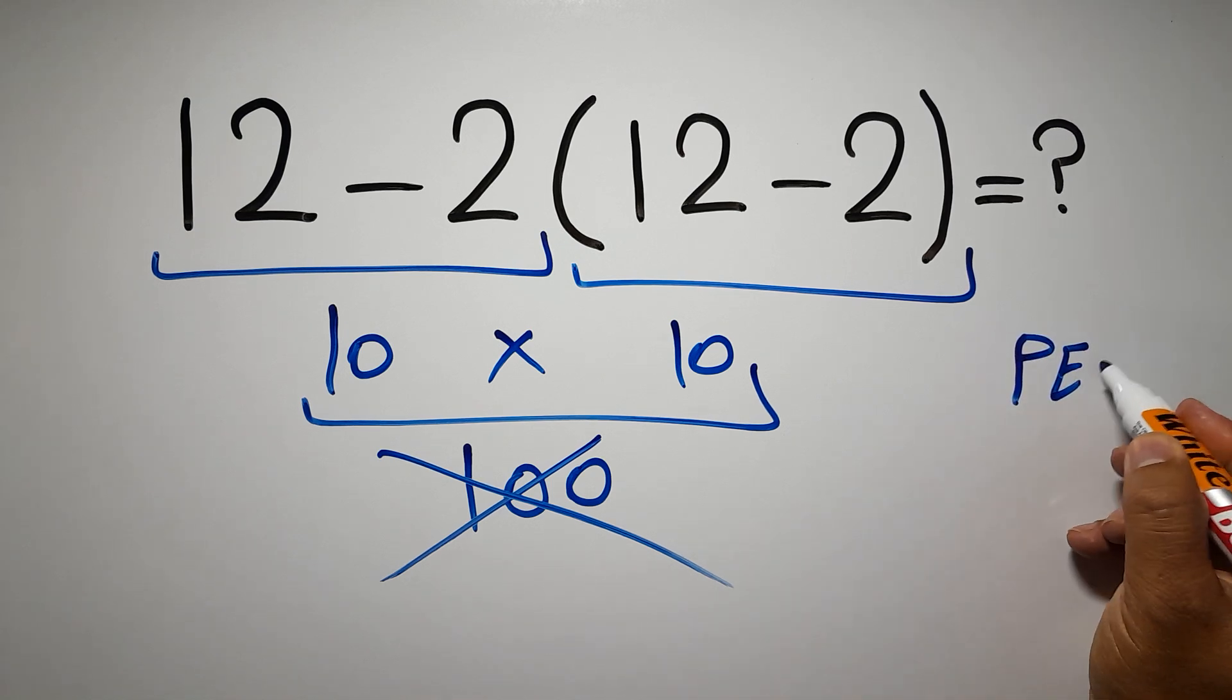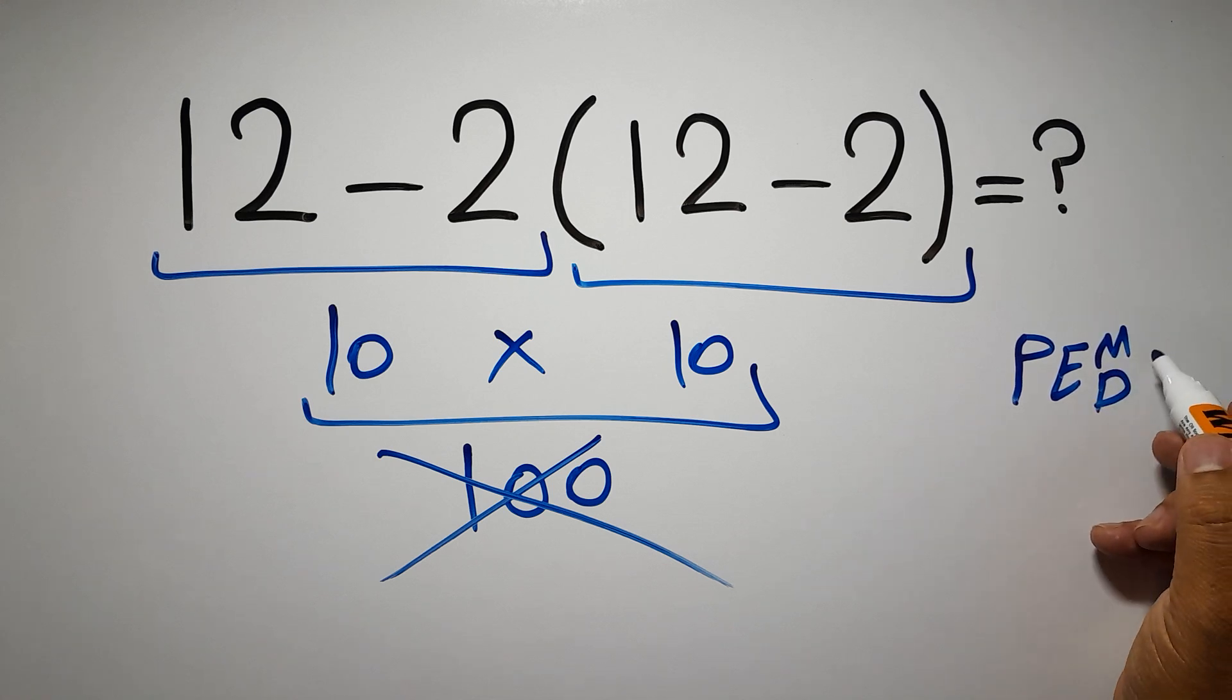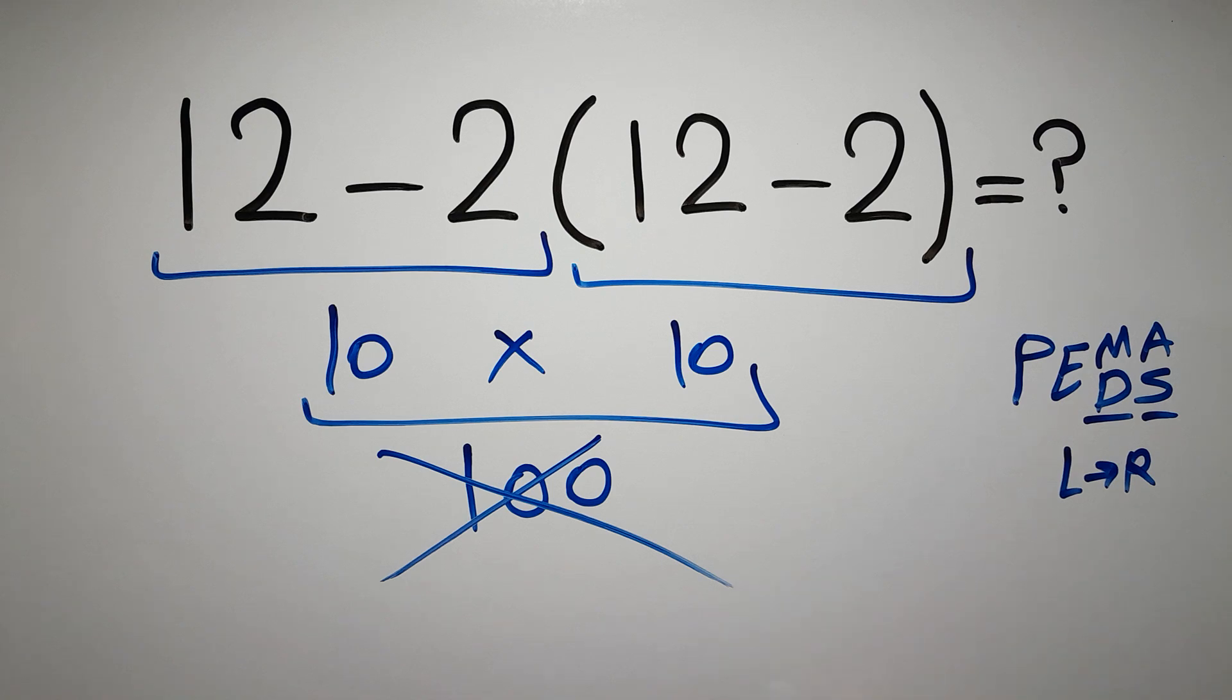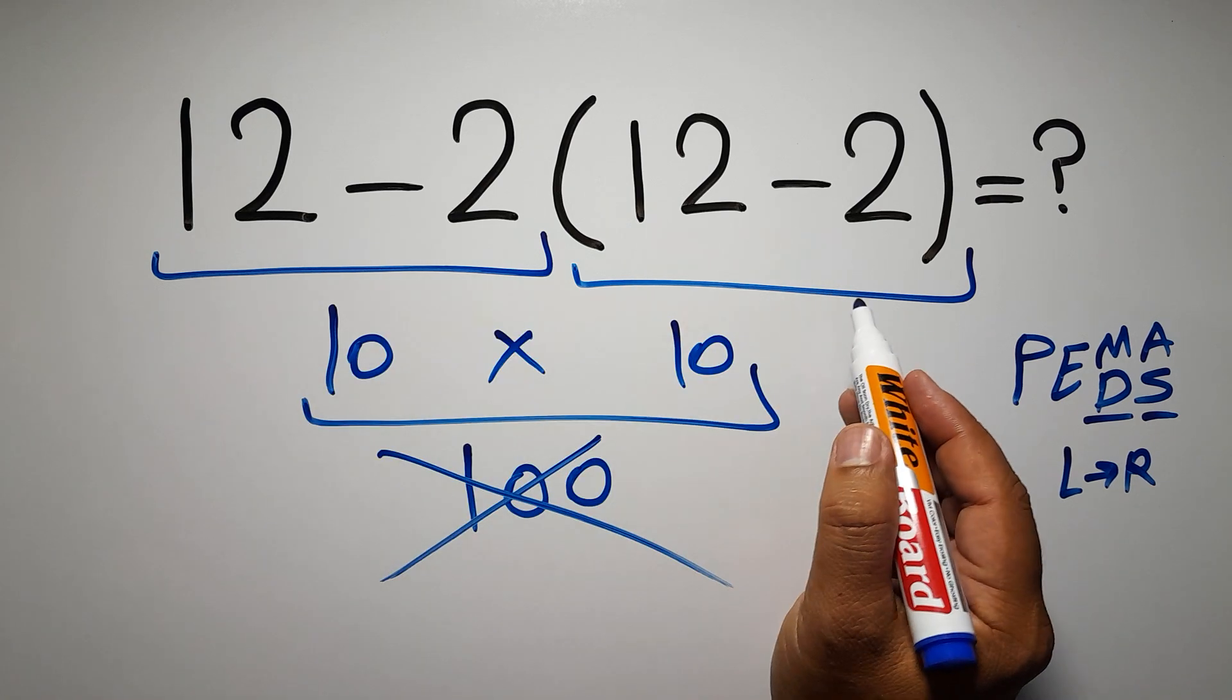Then exponents, then multiplication or division, and finally addition or subtraction. Remember that multiplication and division have equal priority and we have to work from left to right. The same applies to addition and subtraction.